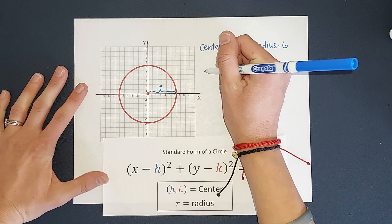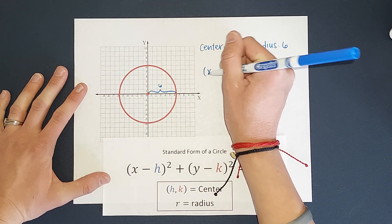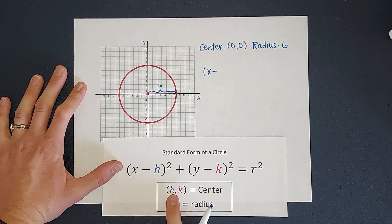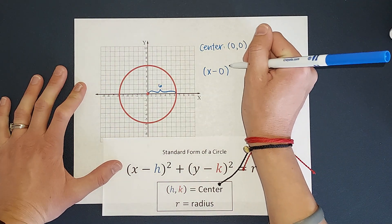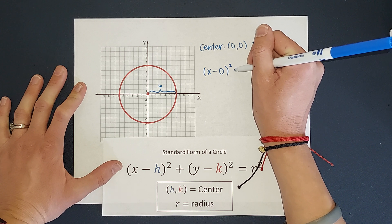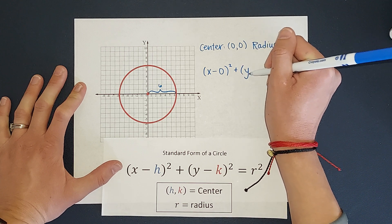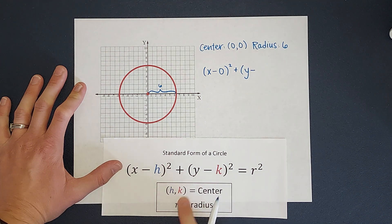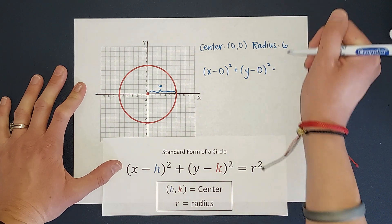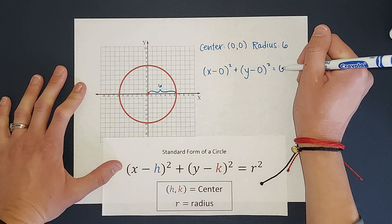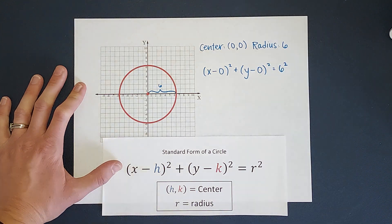I am going to have x minus h. h is the first number in my ordered pair of the center, so it's zero. Squared plus y minus k, which is the second number of my ordered pair, it's zero again, squared equals my radius, which is six, squared.